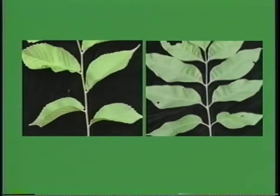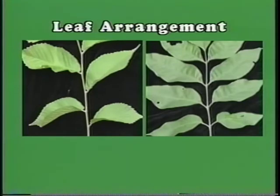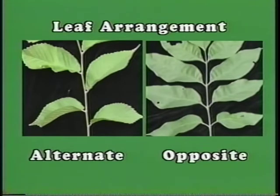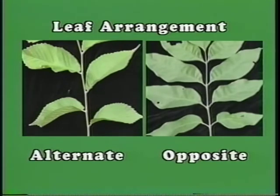Carefully observe the twig and leaf arrangement. One of two arrangements will be noted. If the base of the leaves are attached at the same height and one on each side of the twig — paired — they're referred to as opposite. The leaf arrangement is referred to as alternate when the leaves are staggered or not opposite on the stem.